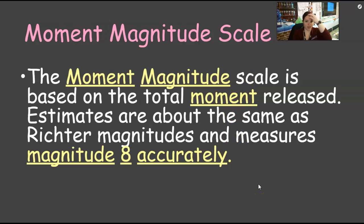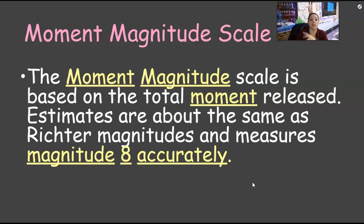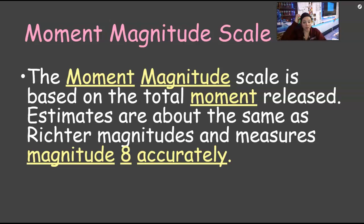This is something I learned which is pretty cool — it's called the moment magnitude scale. The moment magnitude scale is based on the total moment released. Estimates are about the same as the Richter, but it actually measures magnitude 8 and above more accurately.